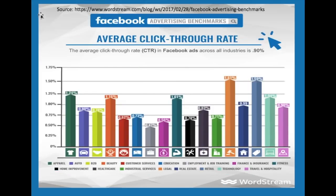Next we're going to look at Facebook advertising benchmarks, again from WordStream. About 0.91% is the average click-through rate on Facebook. You could look at different industries here — if you're in travel and hospitality it's about 0.9%, whereas if you're in legal it's very high at 1.61%. On Facebook, you want to have a higher click-through rate because it helps with your relevancy score, which I'll show in a graph later — you can see the impact click-through rate has on quality scores in Google Ads and relevance scores in Facebook Ads.